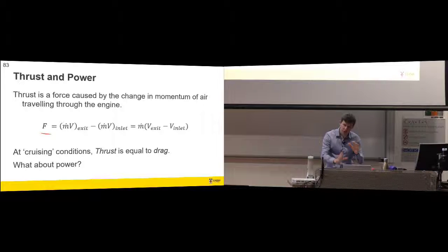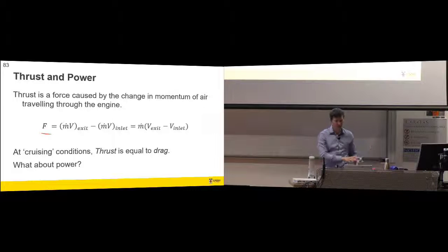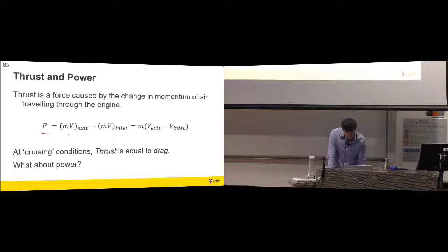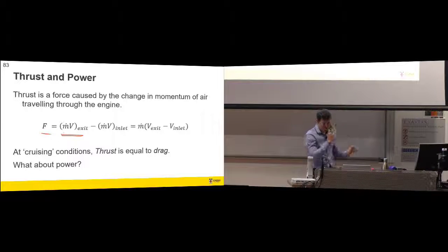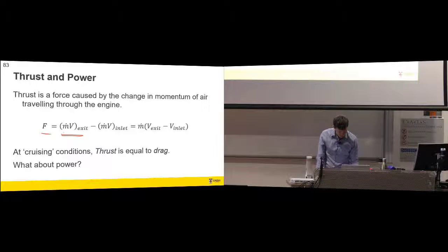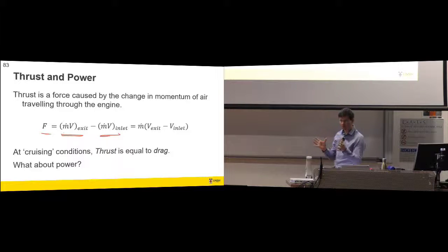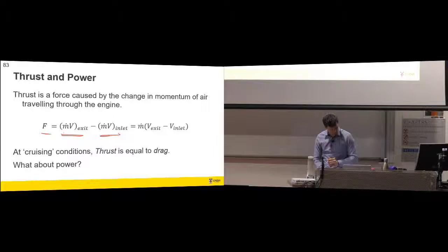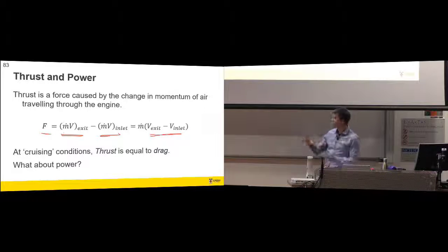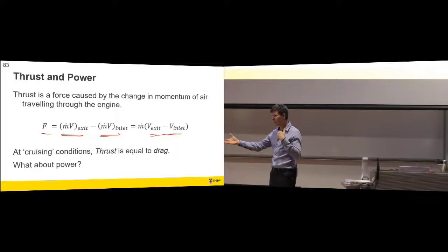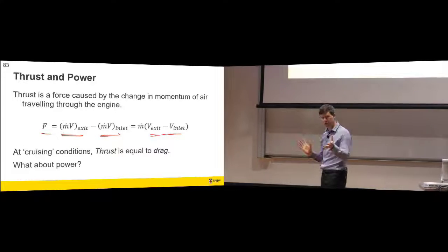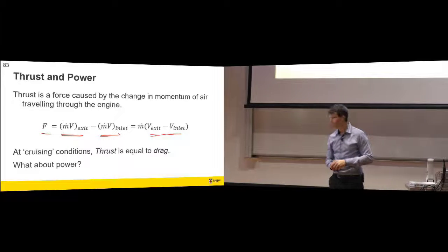The thrust force is mass times (exit velocity minus inlet velocity). That's the change in momentum: mass times the velocity at exit minus that same mass times the velocity at inlet, assuming equal mass flow at inlet and outlet. So the thrust force is just the mass flow rate times the difference in velocities. The more velocity difference you can achieve, the more thrust you get - and it's proportional to mass flow rate, so double the mass flow rate gives double the thrust.